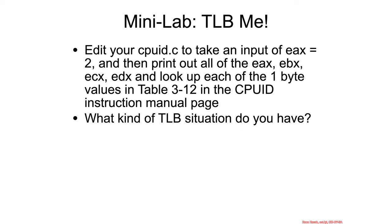For the Minilab: edit your CPUID code, set EAX equal to 2, and print out all the EAX, EBX, ECX, and EDX values. Then go into the manual, look at Table 3-12 in the CPUID instruction page, and translate what your entries are saying — each byte describes something about your supported TLBs and other caching types.